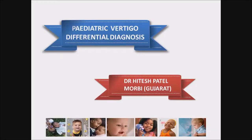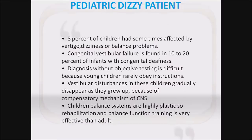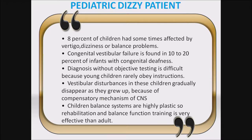Why is this topic important? Because most of the diseases routinely seen in adults are different from pediatrics. 8% of children are sometimes affected by vertigo, dizziness, or balance problems. Congenital vestibular failure is found in 10 to 20% of infants with congenital deafness. Diagnosis without objective testing is difficult because young children rarely obey instructions. Vestibular disturbance in these children gradually disappears as they grow up because of compensatory mechanisms of the CNS. Children's balance systems are highly plastic, so rehabilitation and balance function training is more effective than in adults.